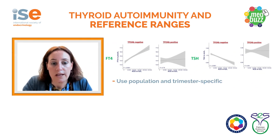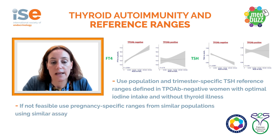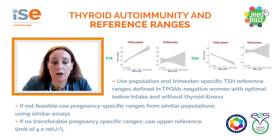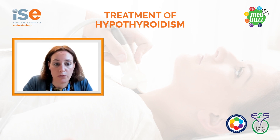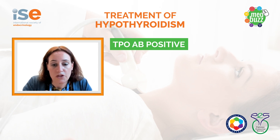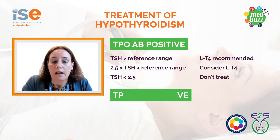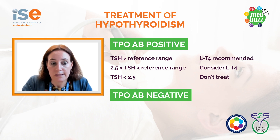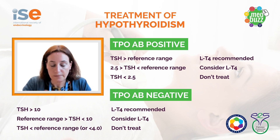If pregnancy-specific reference ranges are not available, ranges determined in populations without thyroid disease can be used. If that is also not possible, the upper limit of normal is generally considered as 4 mIU/L. Current guidance from the American Thyroid Association recommends that when TPO antibodies are present and TSH is above the upper limit of normal for the reference range, levothyroxine should be given. For TPO antibody-negative women, this is certainly indicated when TSH is greater than 10 — similar to a non-pregnant woman — though most practitioners will start levothyroxine once TSH exceeds the upper limit of the reference range.